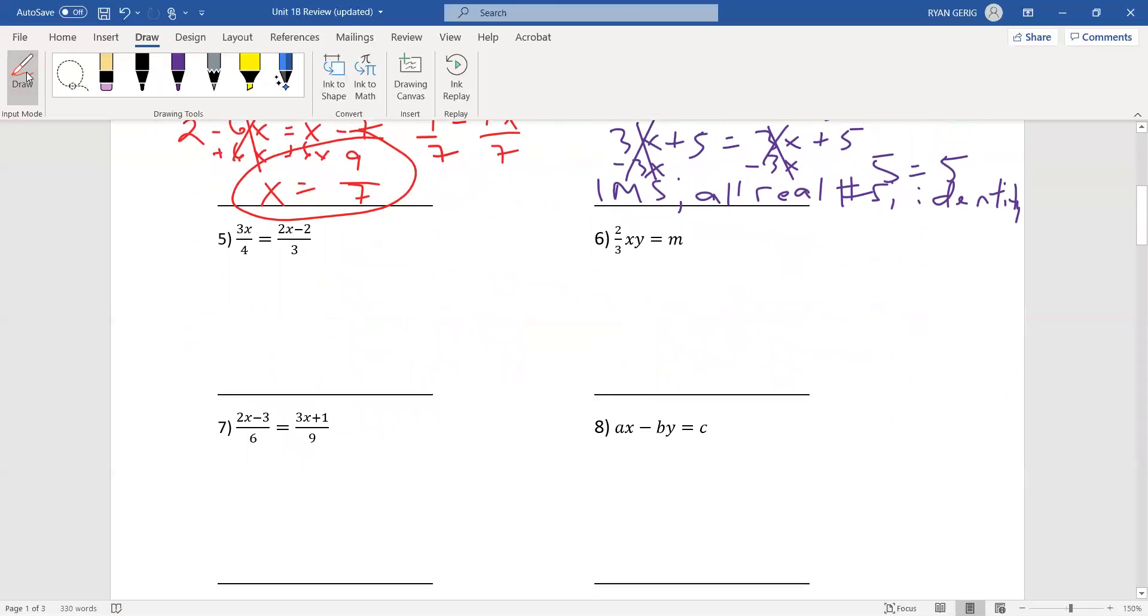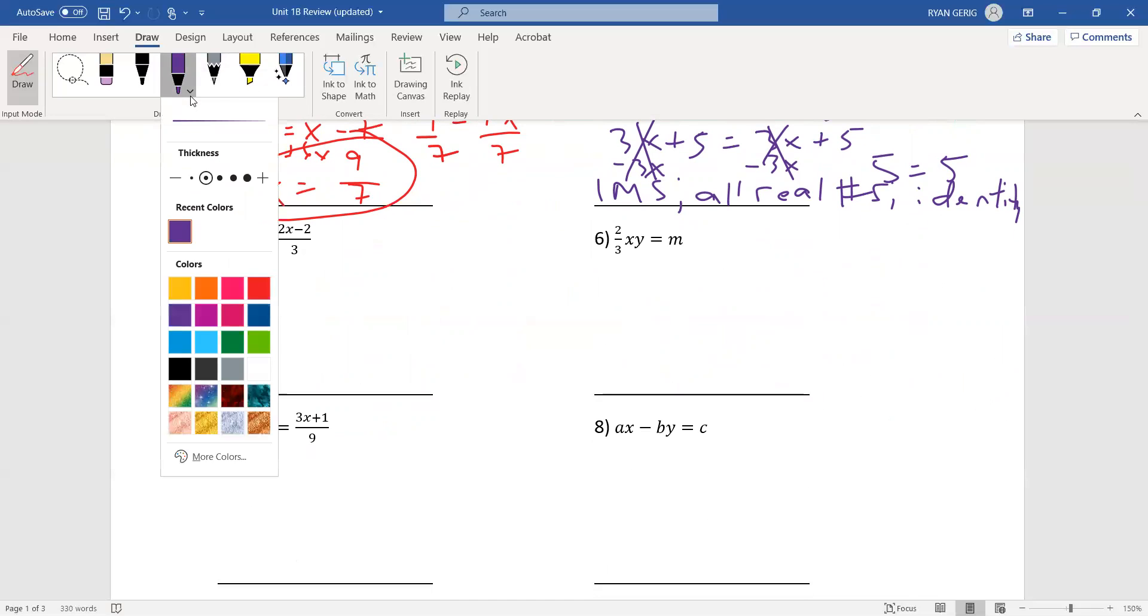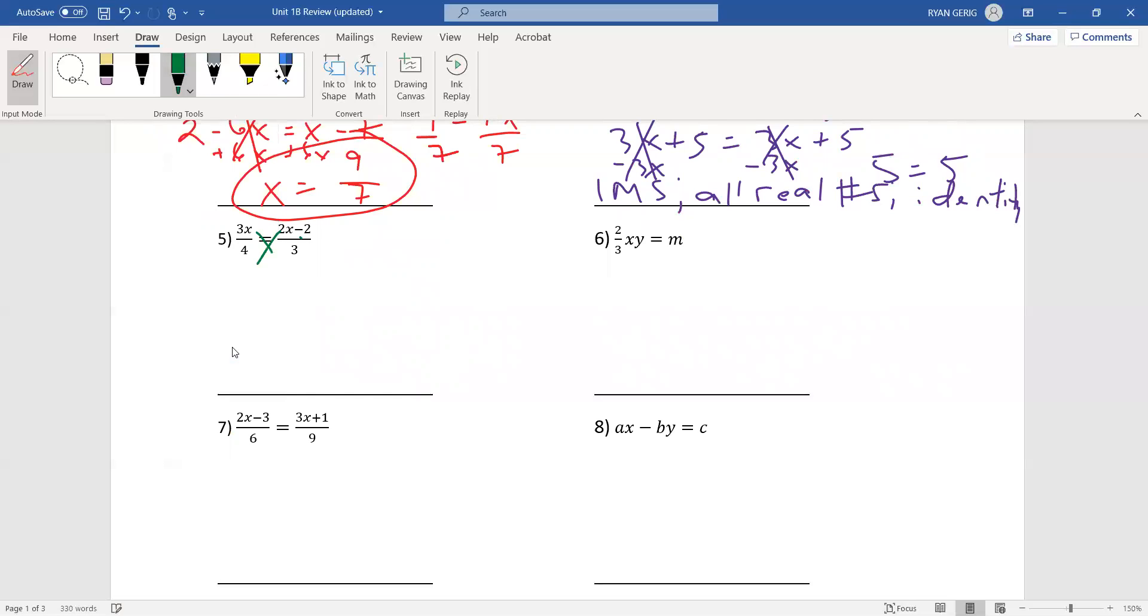Number five. Another proportion. Let's switch colors again here. Go green. Cross multiply. So, 3 times 3x equals 4 times 2x minus 2. I don't need to distribute here. It's just 3 times 3x, which is 9x. 4 times 2x is 8x minus 8. Subtract 8x from both sides. And, I get 1x or just x equals negative 8. Don't forget the negative. And, I'm actually done with that one.